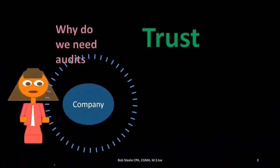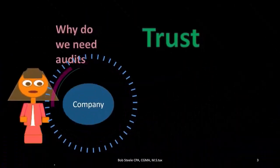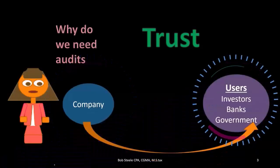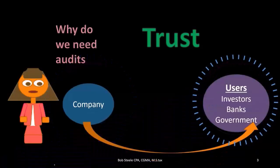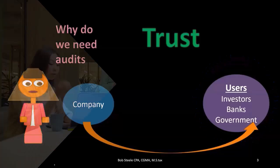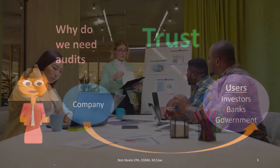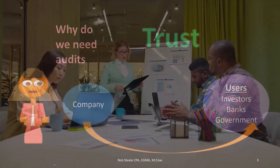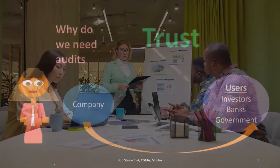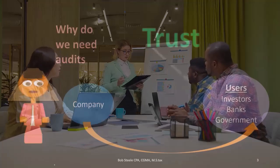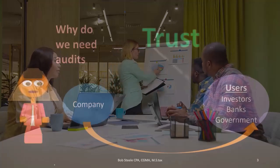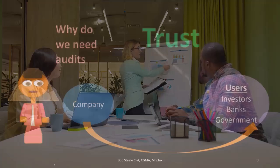For example, if we think about a company and who they're going to do business with — who they're going to have transactions with — it could be end users, like investors. If you're talking about a publicly traded company, more and more normal people are investing and putting their money into the company, and the company wants those investments, of course.